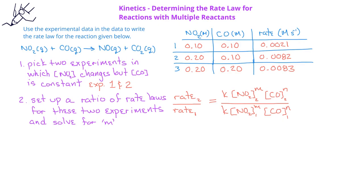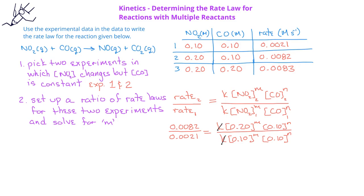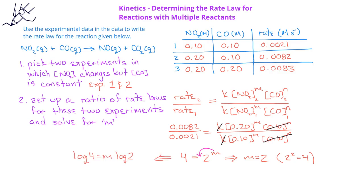Now we can solve for the exponent m. We can simplify by filling in the data for the rates and each of the concentrations. We can cancel out the rate constants in the numerator and denominator since they're the same, and we can also cancel out the 0.10 to the n power in the numerator and denominator since those are also the same. When we divide what's left over, we get 4 equals 2 raised to the m power. You might be able to easily see that m should be 2 since 2 to the second power is 4. But if you did not have such an easy situation, you could use logarithmic functions to help you identify the value of m. To do that, you would take the log of both sides of the equation, and then the exponent would come down in front of the log of 2. So we have log 4 equals the exponent m times the log of 2.